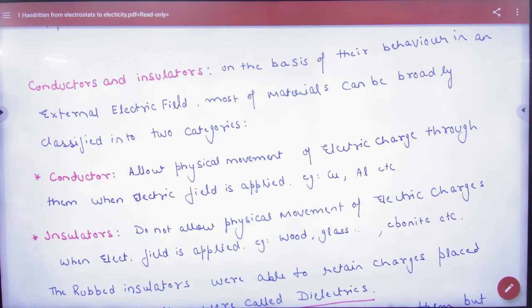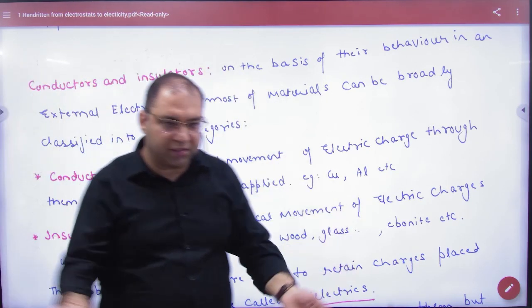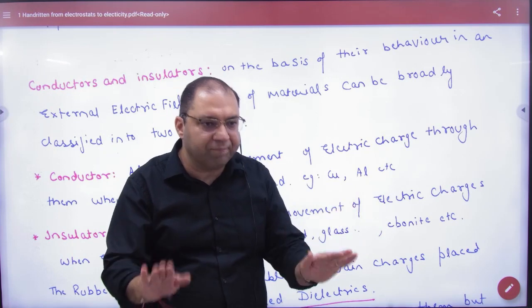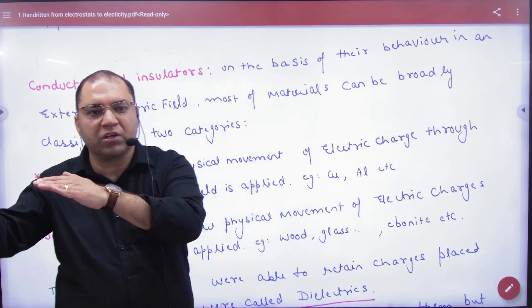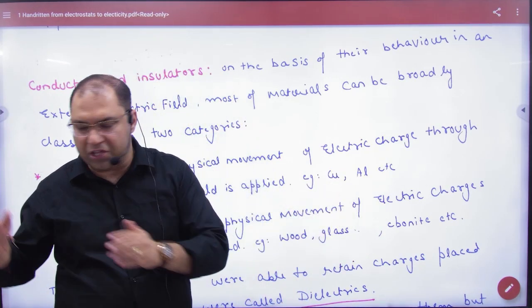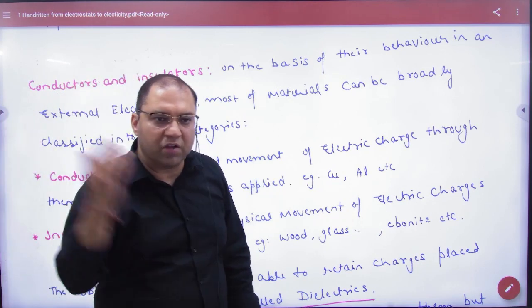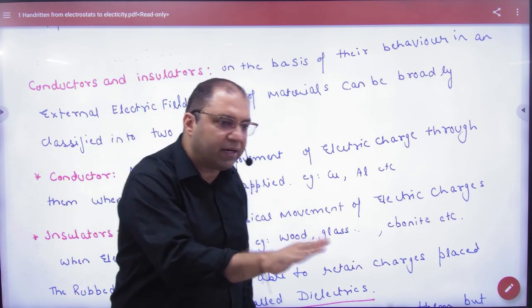It's very simple. Conductor is such a material where charge is on the surface. It doesn't remain inside. It's a property. And charge conducts also. If you apply potential difference, then in the conductor, there will be electron flow. Electricity conducts.